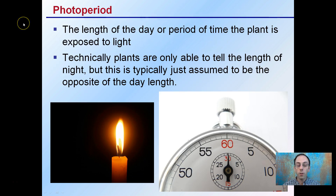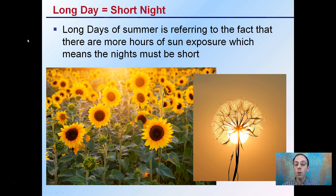Photoperiod in the general sense is described as the length of day or period of time the plant is exposed to light. Typically plants are only able to tell the length of night, but this is assumed to be the opposite of the day length. A long day is the same as saying a short night — long days of summer refer to more hours of sun exposure, which means nights must be short.